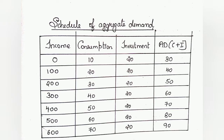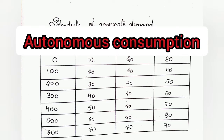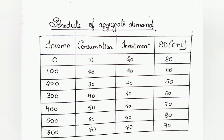One common doubt students have is: when income is zero, how can consumption be 10? There are people who are not earning anything — does that mean they are not eating? No. There are students who are not earning anything but still have daily expenses. When there is no income but still there is consumption, we call it autonomous consumption.